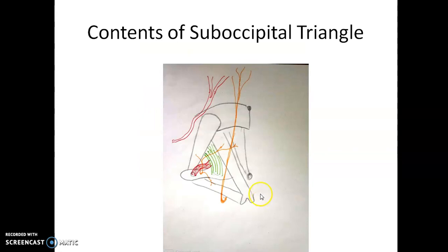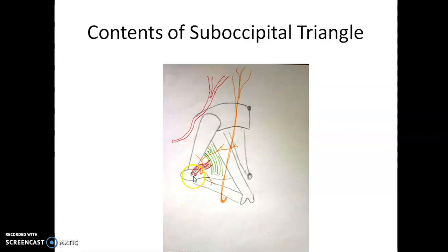Coming to the contents of the suboccipital triangle — and it won't be as simple as 'suboccipital artery, suboccipital vein.' The most important content is the vertebral artery. Our hindbrain is supplied by this artery, which travels across the vertebrae through the foramen transversarium in each transverse process. The portion in the suboccipital triangle is called the third part of the vertebral artery, which then enters through the foramen magnum to supply the hindbrain.